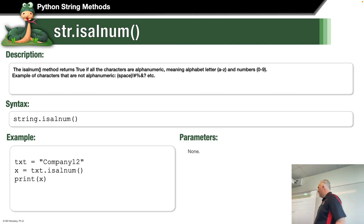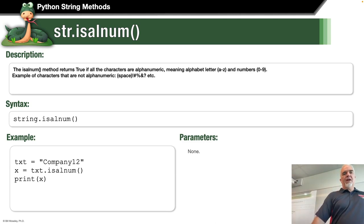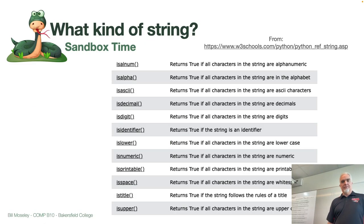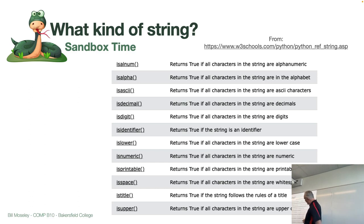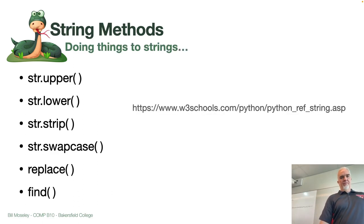You can see none of these 'is' methods have any parameters associated with them — nothing goes in the parentheses, because everything you need is there in the string itself. It's just saying: string, is it alphanumeric? And those are return-type functions or methods.